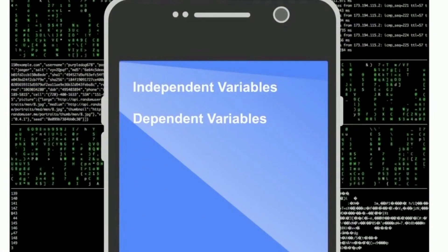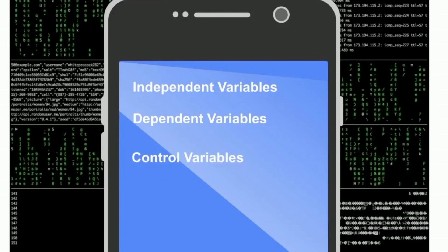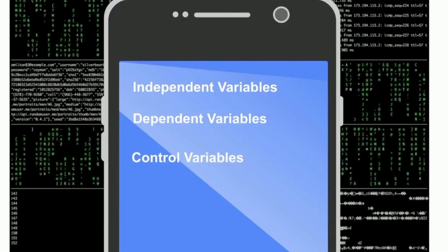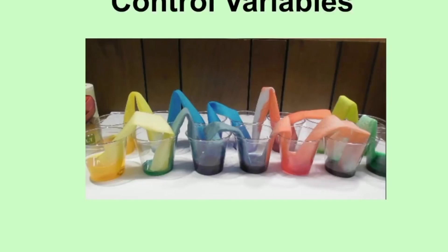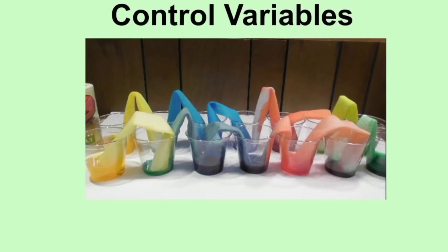You also had several constant or control variables: you used the same type of cup, the same amount of water, the same paper towels, etc.